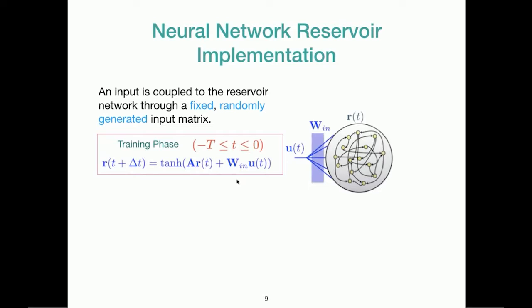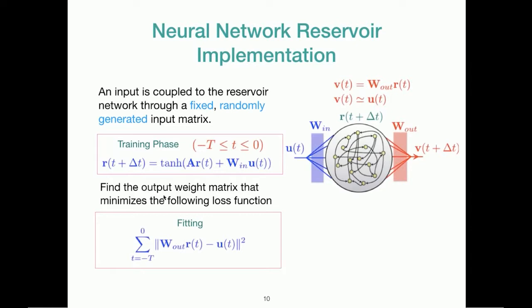So once the training phase is over we are going to find output weight matrix that minimizes the following loss function. The goal here is to find an output weight matrix W_out so that given an input to the reservoir, the reservoir should be able to predict the next time step. So that's the goal of finding this W_out output function.